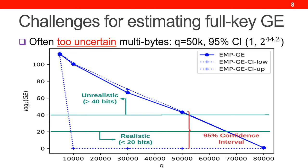Let us focus on the case of Q equal to 50,000. The confidence interval is labeled in red here. The confidence interval has a lower bound of 1 and an upper bound of 2 to the power of 44.2. Generally, 2 to the power of 20 is considered within an attacker's computational power to enumerate key candidates, thus presenting a realistic threat. Usually, 2 to the power of 40 is considered too big to enumerate, thus safe against the attack. This confidence interval says that GE is somewhere between 1 and 2 to the power of 44.2, including values representing both realistic and unrealistic attacks. Hence, the evaluator cannot tell if the target device is safe or not against such attacks.